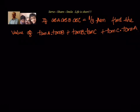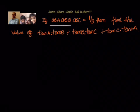We will write down what is given to us and what we need to find out. What has been given to us is cos A cos B cos C equal to 1 by 3. What we need to find out is tan A tan B plus tan B tan C plus tan C tan A.